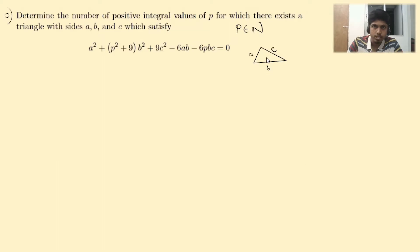So at first, let's simplify the expression. The expression can be written as a squared plus (3b) squared minus 2 times a into 3b plus (pb) squared plus (3c) squared minus 2 times pb times 3c equals 0.